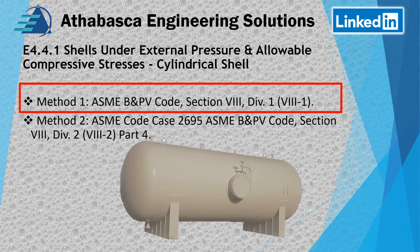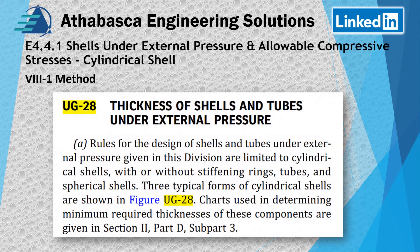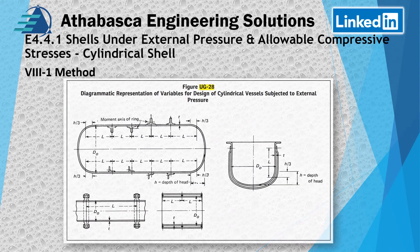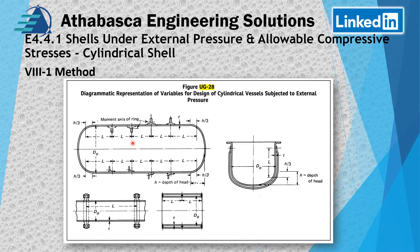Continuing with Method 1: in Section 8 Division 1 we find the fundamental statements in UG-28, thickness of shells and tubes under external pressure. It describes the three forms of cylindrical shells. In our example, we have a shell without stiffeners, and L is defined as the centerline distance between stiffening supports. There are also cases with flange connections and internal components.